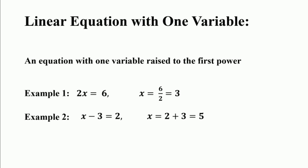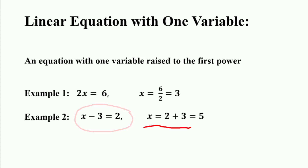Similarly, for the second example, x minus 3 is equal to 2: by isolating the variable, minus 3 moves to the right-hand side and becomes plus 3. So x is equal to 2 plus 3, which equals 5. This is the linear equation with one variable, where the power of the variable equals 1.